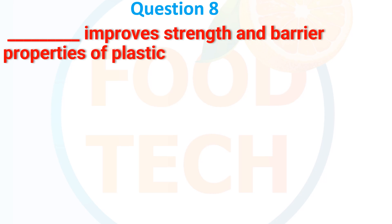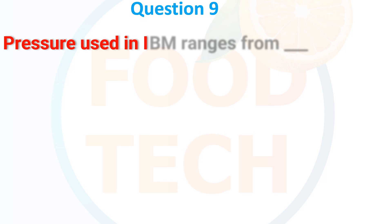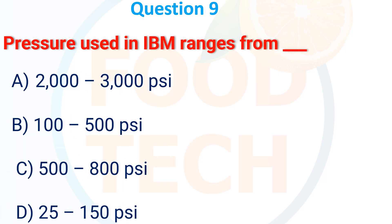Dash improves the strain and barrier property of plastics. (a) Stretching, (b) Blowing, (c) Heating, (d) Cooling. The answer is (a) Stretching.